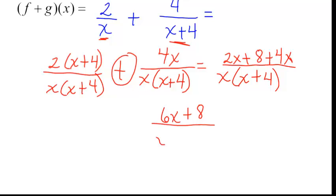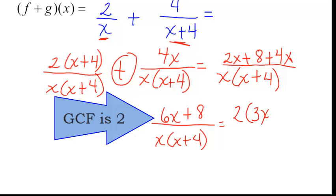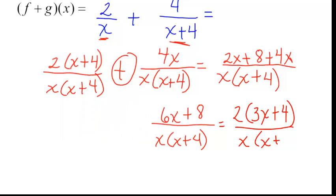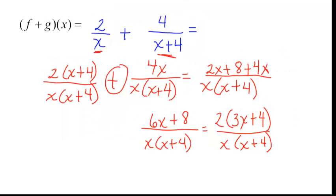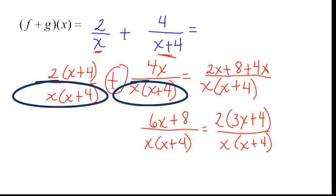Now I can simplify. That will be 6x plus 8, all divided by x(x+4). I could factor the numerator: 2 will come out, giving me 2(3x+4). But that really didn't help me. I'm not able to cancel anything, so I'm done. What did we do? We got a common denominator, added the numerators together, and combined like terms.